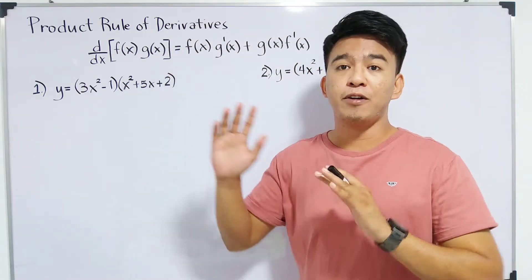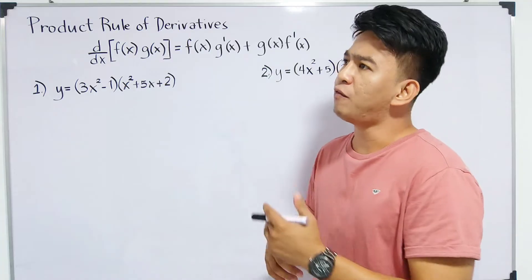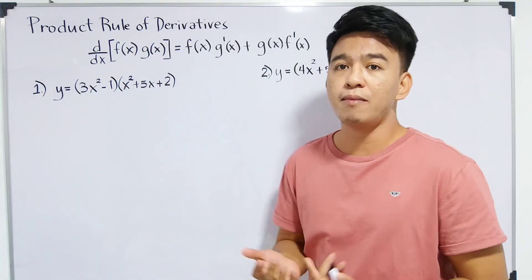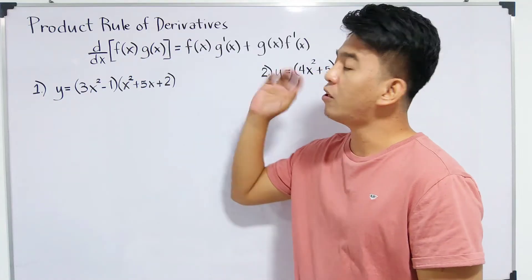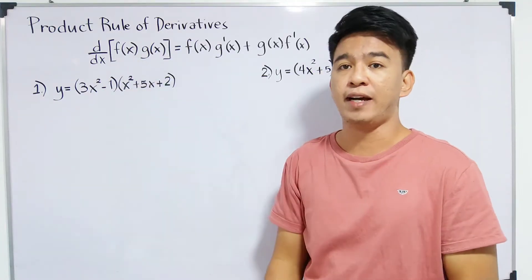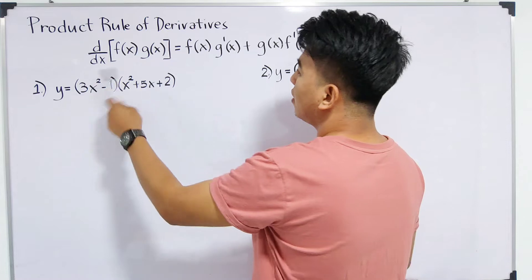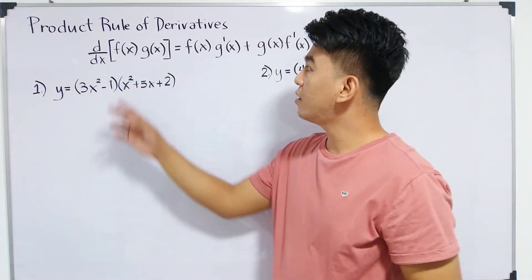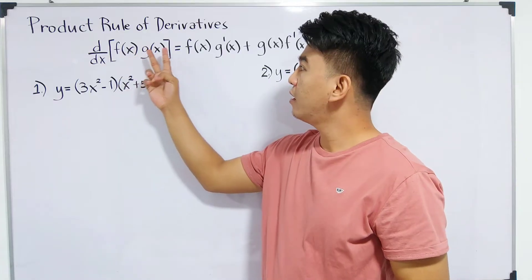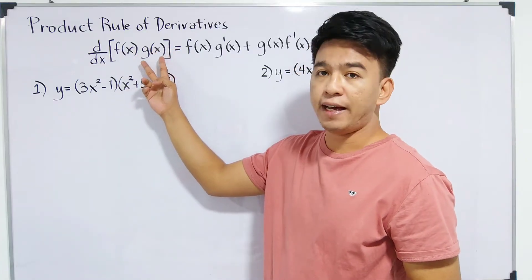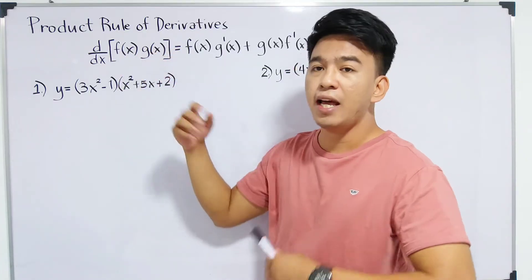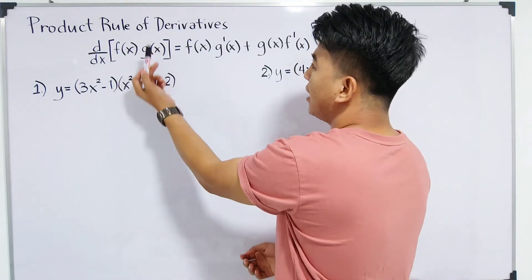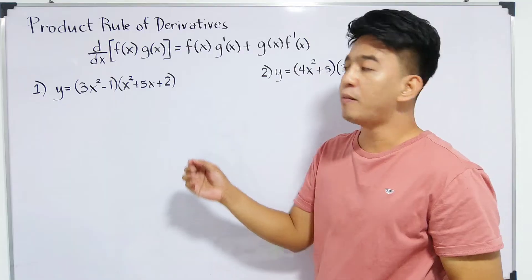So, we have here the formula for the product rule. There are many different forms — some use u and v — but here, since we're talking about functions, I'll be using the notation of f of x and g of x. So, we have here the derivative of a function, d over dx, times f of x times g of x. This is our given function, and to get the derivative of the given function f of x and g of x, we have here the formula.